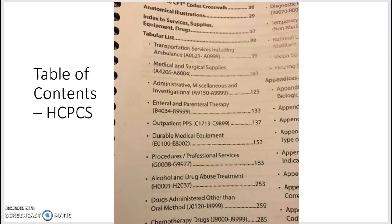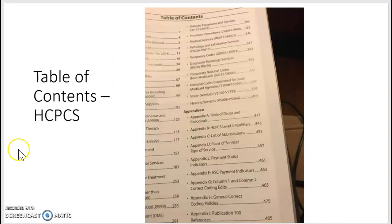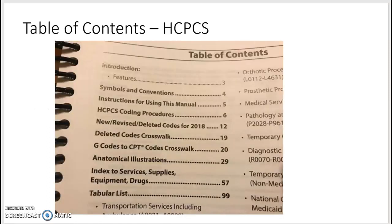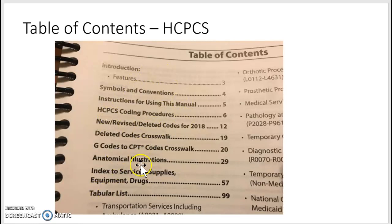The table of contents has all the information you need in case you forget what you're looking for. You really only need your index and the tabular list — those are the most important things. Sometimes you might also want to look at the anatomical illustrations if you need to know what anatomy or what part of the body is being discussed.